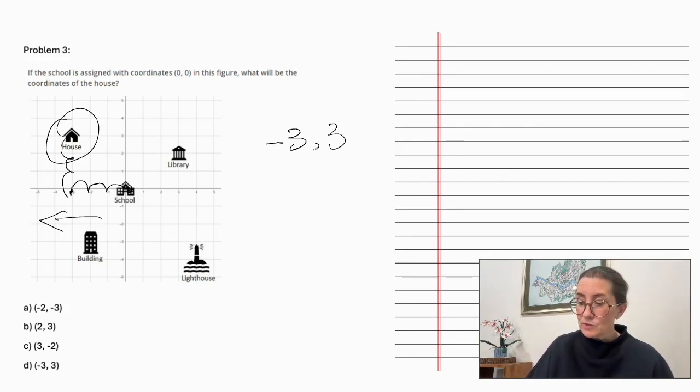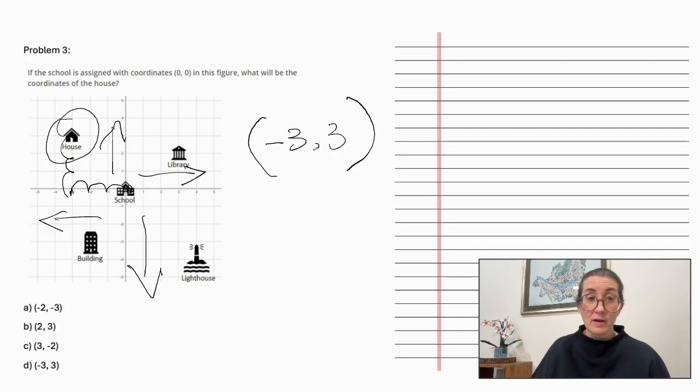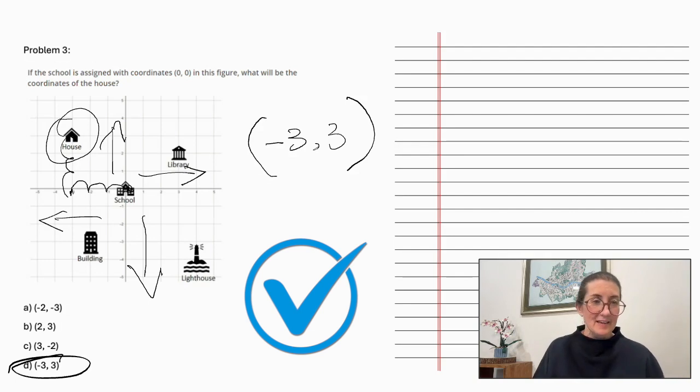So negative this way and positive this way. So negative 3 and 3 are the coordinates of our house. And let's find the answer there, D, negative 3 and 3.